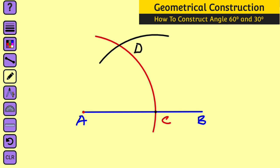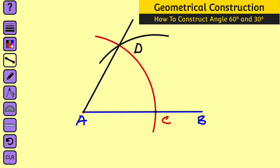Use your ruler to connect the point of intersection D and point A. What you are having there is angle 60 degrees. So this is 60 degrees.